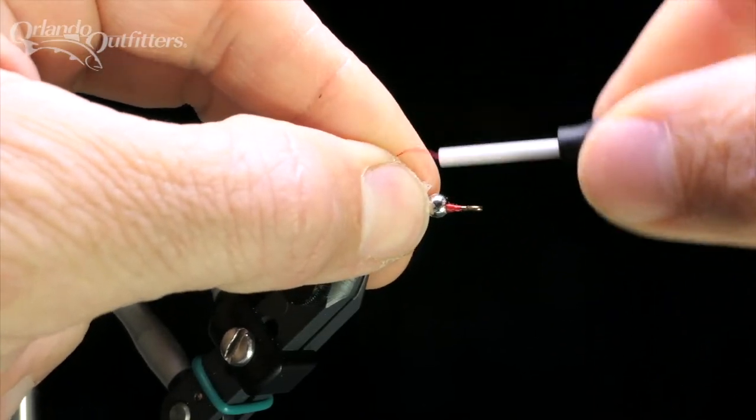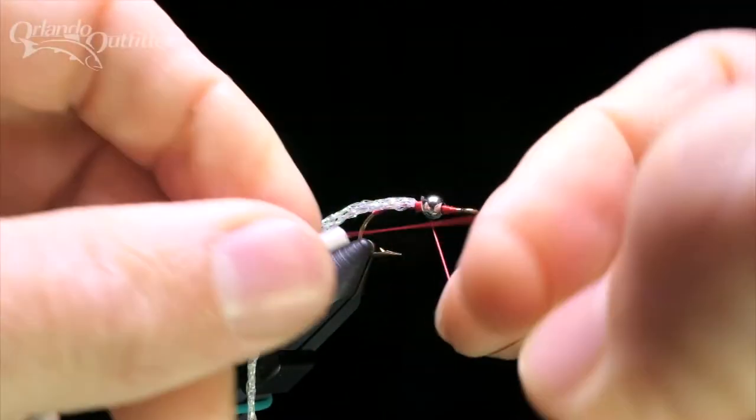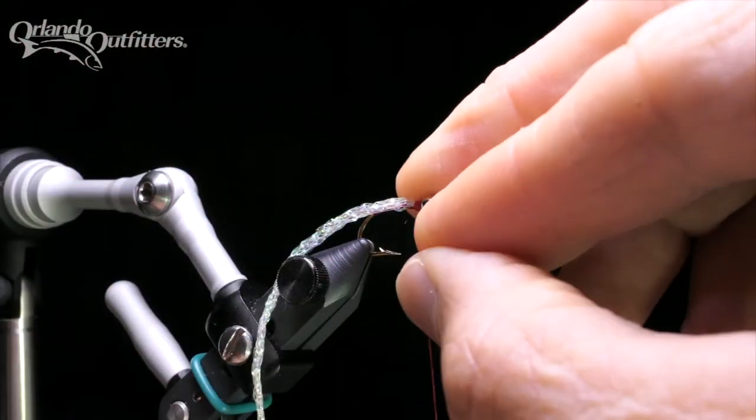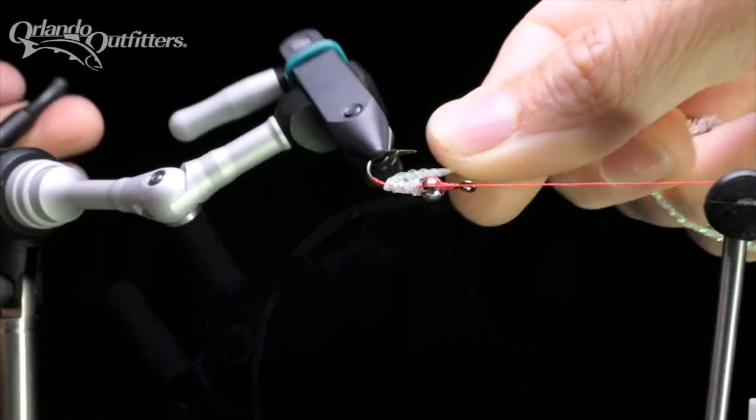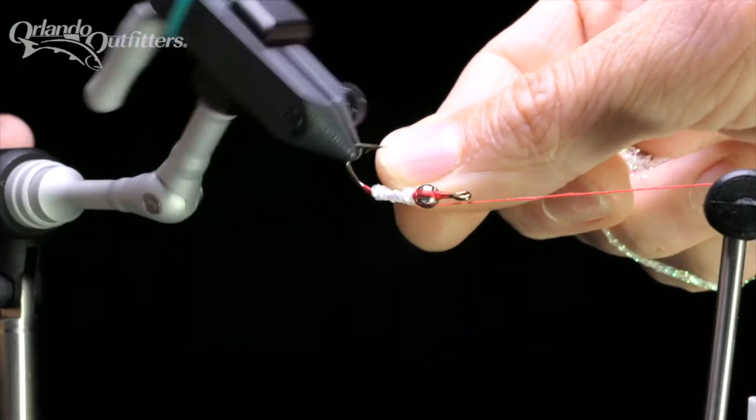Tie in the end of the sparkle braid right behind the bead. Tie a half hitch to secure your thread. Then wrap the sparkle braid down to the bend, covering the thread completely.